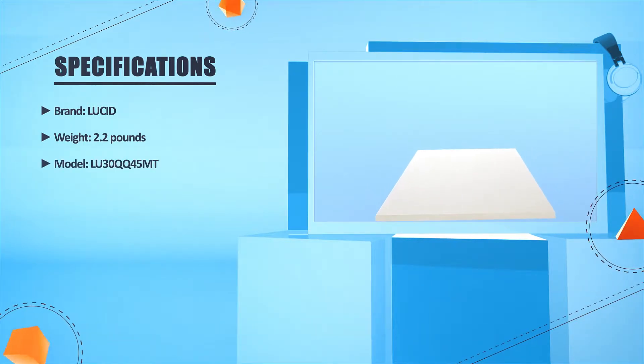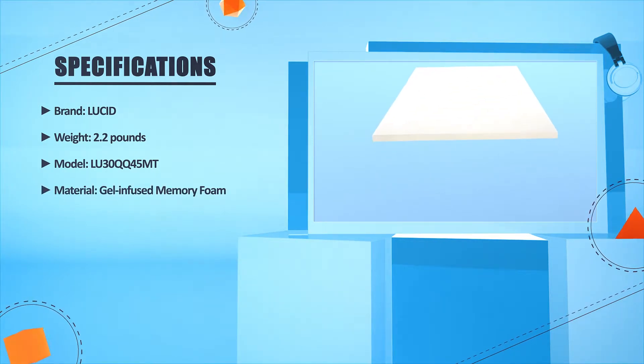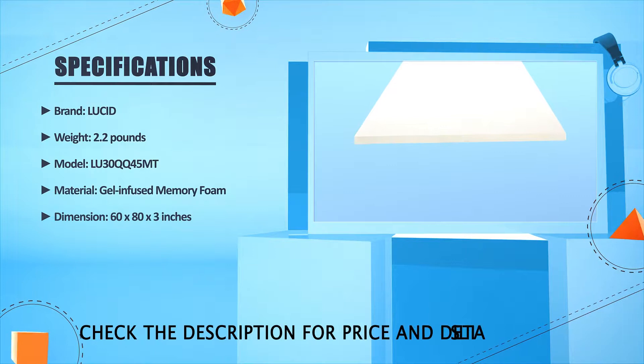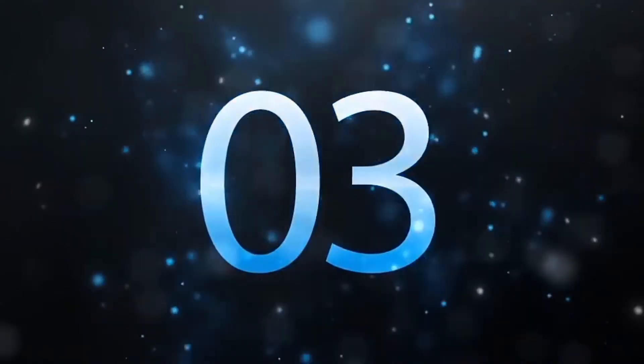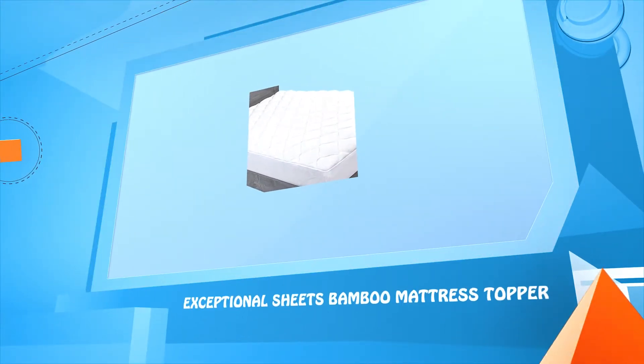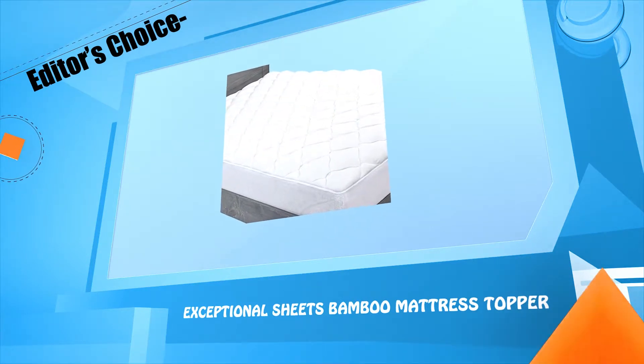Brand: Lucid. Weight: 2.2 pounds. Model: LU30QQ45MT. Material: gel-infused memory foam. Dimensions: 60 by 80 by 3 inches. Number three: Exceptional Sheets bamboo mattress topper.